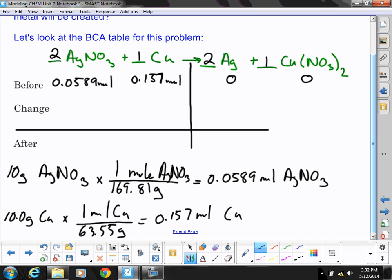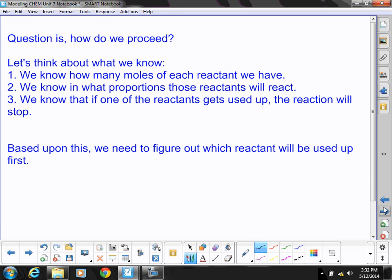And so that is different than what we have done in the past, where we only had one value at the start, but now we have multiple values. And so the question is, what do we do from here? So how do we proceed?